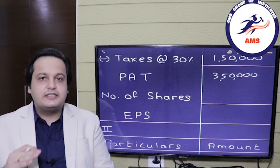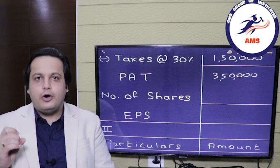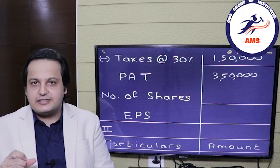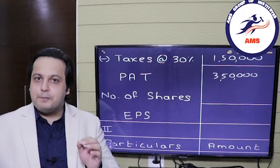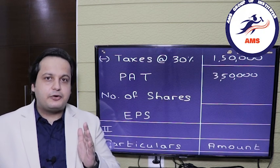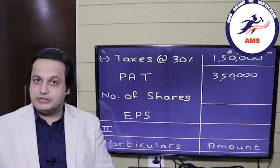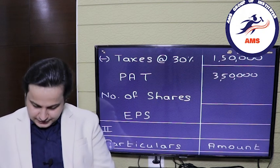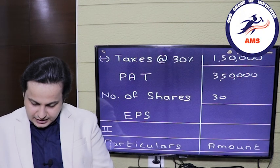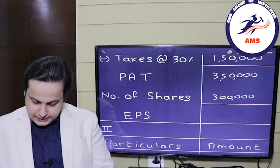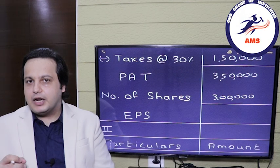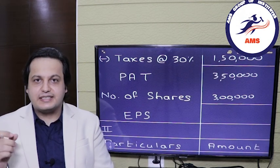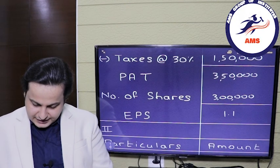In situation one, there is no debt, so all the capital — that is, the 30 lakh rupees — has been financed through shares. The number of shares will be 30 lakh rupees divided by the face value of one share, that is 10 rupees, giving us 3 lakh shares. Applying the EPS formula, we get an EPS of 1.16 in this case.